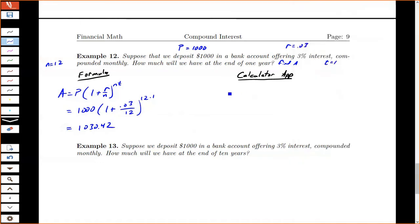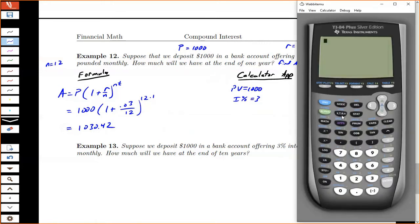If I was doing this on the calculator app, my present value is 1,000. The I percent is 3. So I had apps, finance, TVM solver. For the N, you can actually do multiplication in here. Remember the big N is little n times T, so I could just do 12 times 1. I know it'll automatically do the multiplication for me.